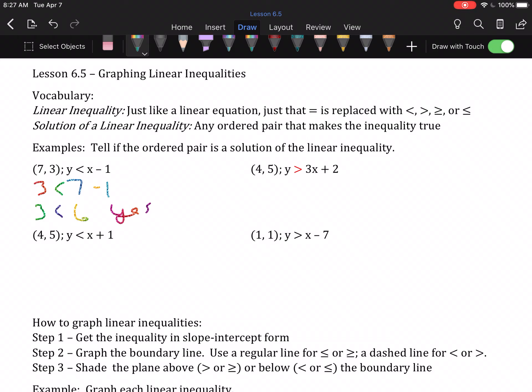For the next equation, 5 goes in place of y, 4 goes in place of x. Don't forget your order of operations. The 5 is going to stay a 5. On the right side, we have to multiply before we add. 3 times 4 is 12, 12 plus 2 is 14. Is 5 greater than 14? Nope. That ordered pair is not a solution.